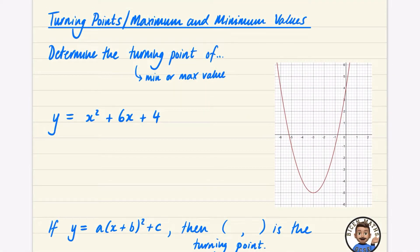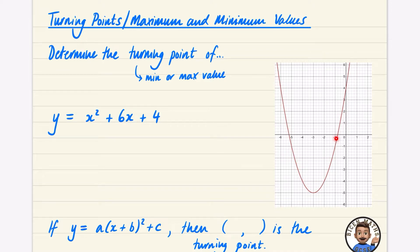In this last video on completing the square, we're going to look at a final application: turning points, which are sometimes called maximum and minimum values. This gets really useful particularly if you go on to study A-level maths. We want to determine the turning point of y = x² + 6x + 4. I've taken a screenshot from Desmos of this graph.